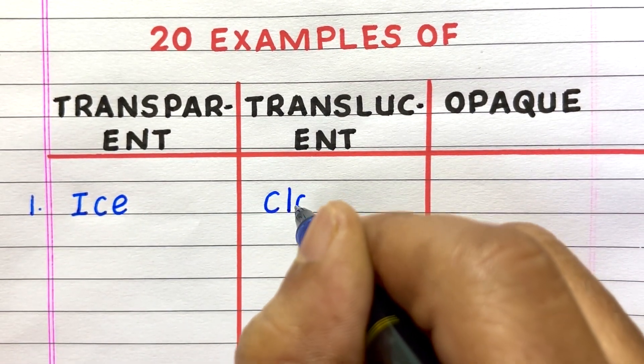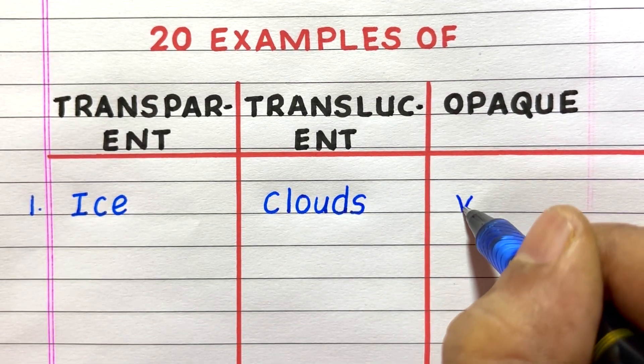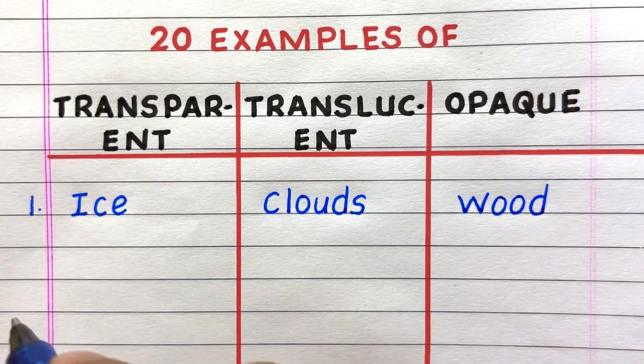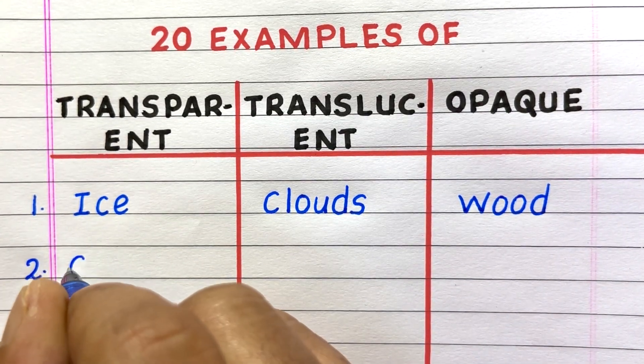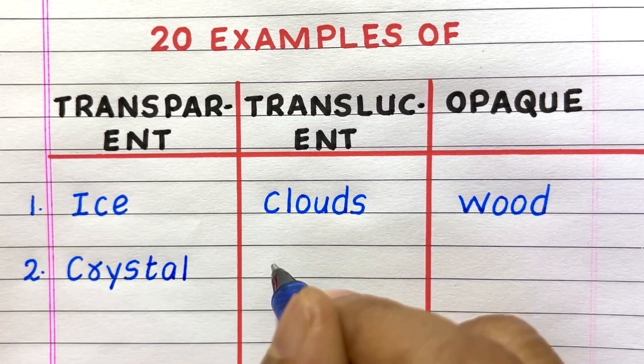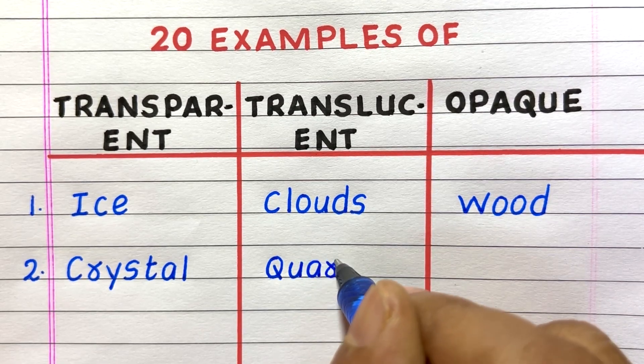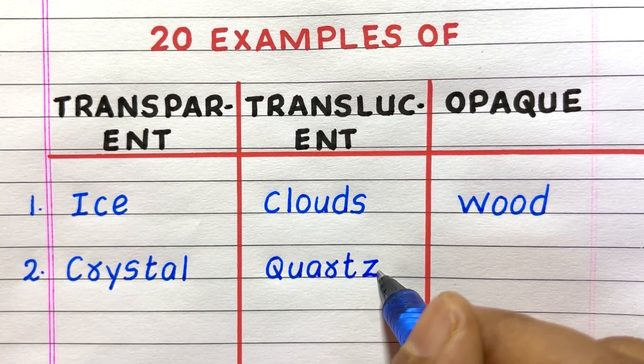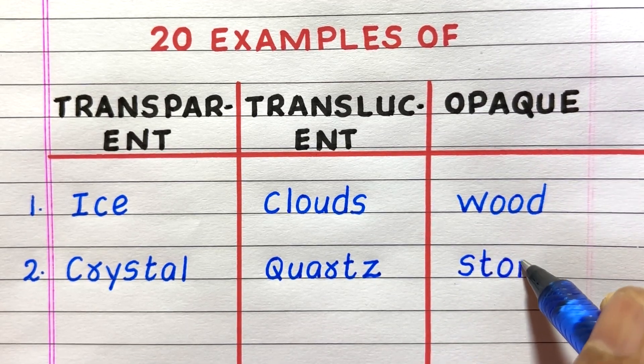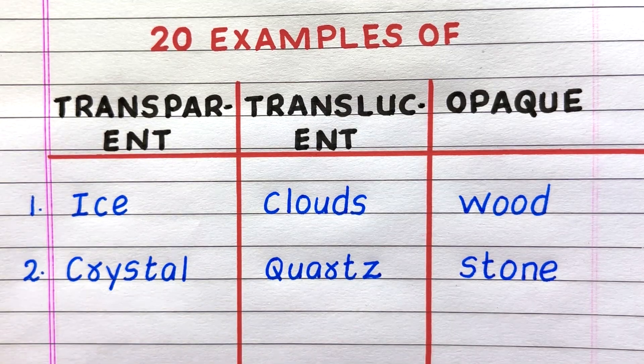First example of a transparent object is ice, translucent clouds, opaque wood. Second, crystal quartz, stone.